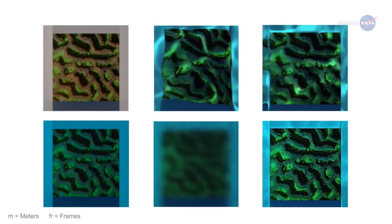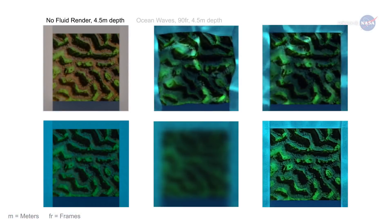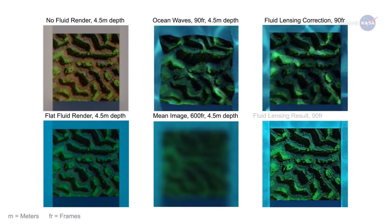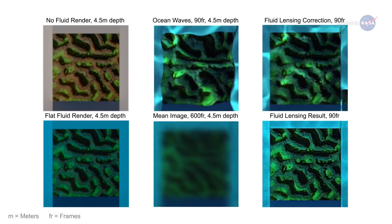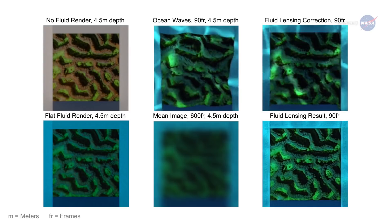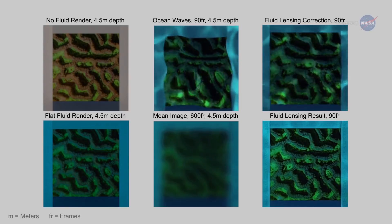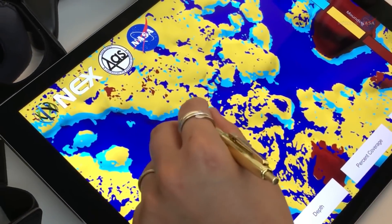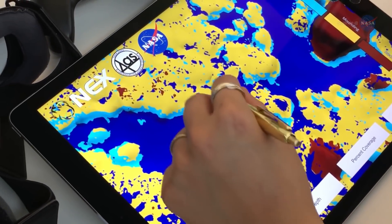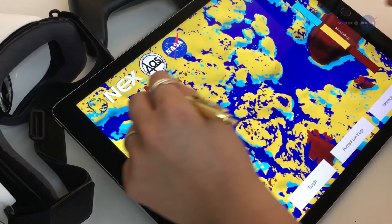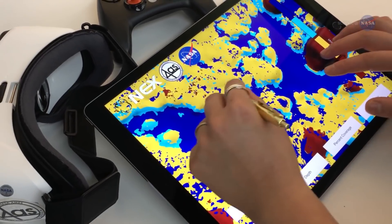Fluid lensing could help researchers establish a high-resolution baseline of global reef area worldwide by augmenting datasets from multiple NASA satellites and airborne instruments. This effort will help identify the effects of environmental changes on these intricate, life-filled ecosystems.